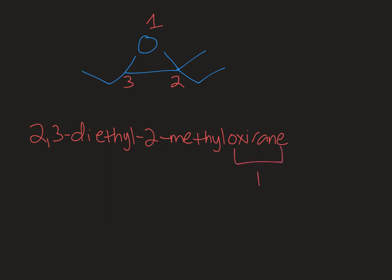So oxirane is the parent name when you use the common naming system, and then these would be the substituents. Basically, the epoxide is the central structure and anything coming off of it acts as a substituent.